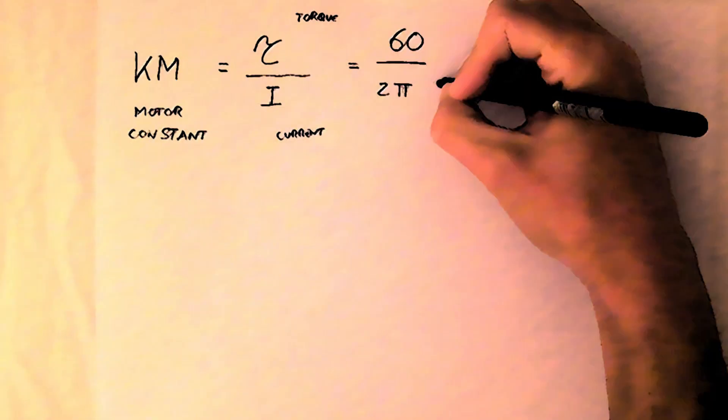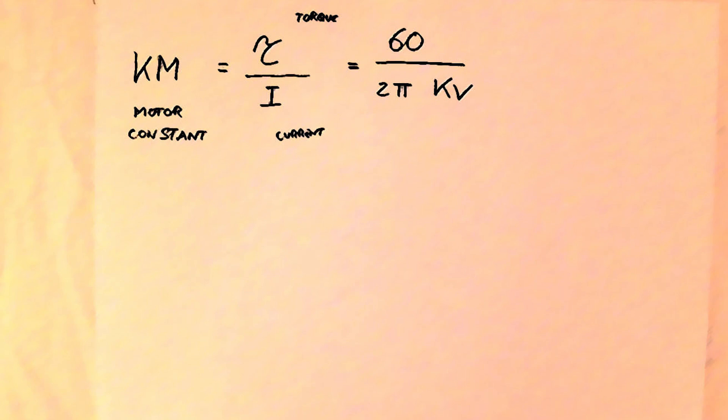To prove this we start from the motor constant, which is defined by the torque divided by the current used to produce that torque, but it is also 60 divided by 2 times pi kV. 60 and 2 times pi are just a matter of units of measure.